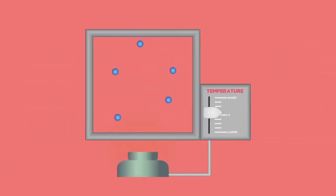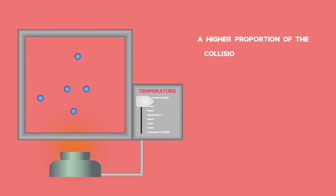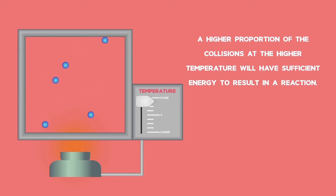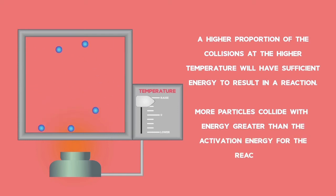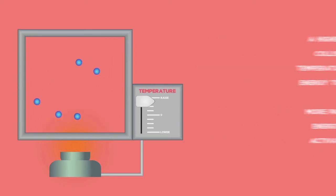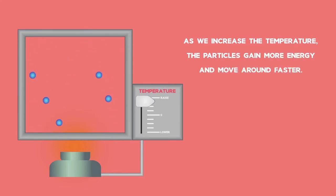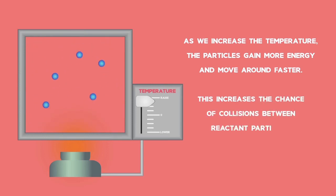So, as we increase the temperature, we increase the rates of reaction. The main reason for this is that a higher proportion of the collisions at the higher temperature will have sufficient energy to result in a reaction. In other words, more particles collide with energy greater than the activation energy for the reaction. In addition, as we increase the temperature, the particles gain more energy and move around faster. This increases the chance of collisions between reactant particles producing more frequent collisions.